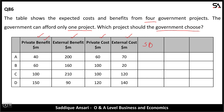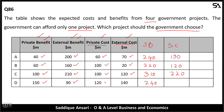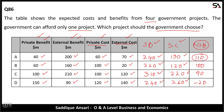To calculate social benefit, we add private benefit and external benefit: 40+200=240, 60+160=220, 100+210=310, 150+90=240. Social cost is the sum of private cost and external cost: 60+70=130, 100+20=120, 100+120=220, 120+140=260. Net social benefit is the difference between social benefit and social cost: 240-130=110, 220-120=100, 310-220=90, 240-260=-20.